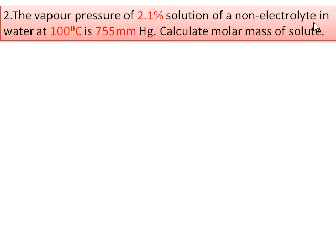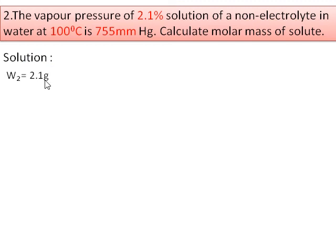Problem 2: The vapor pressure of a 2.1% solution of a non-electrolyte in water at 100°C is 755 mmHg. Calculate the molar mass of the solute. Whenever a percentage is given, it means that many grams of solute are present in 100 gram of solution. So W₂ = 2.1 gram in 100 gram of solution.